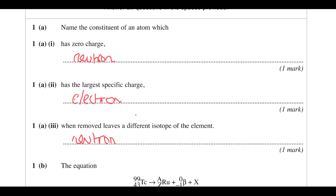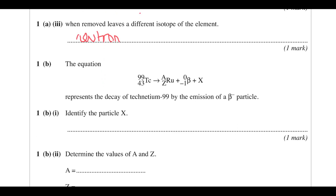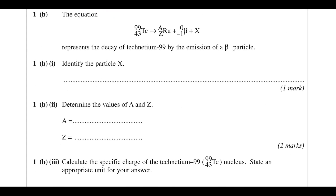We've got an equation for a beta minus decay of technetium, and we want to identify a particle called X. For producing an electron we also have to produce an anti-electron neutrino to conserve your electron-lepton number. The marker scheme usually lets you get away with just going anti-neutrino, but to be specific, it's an anti-electron neutrino.